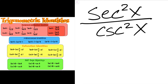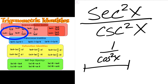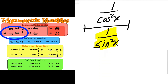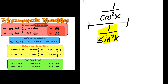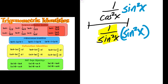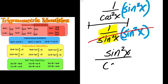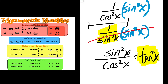So what can I do next? I can simplify both of these: secant squared x simplifies to 1 over cosine squared x, and cosecant squared x simplifies to 1 over sine squared x. I want to get rid of the denominator, so I multiply by its reciprocal, which is sine squared x. That eliminates everything in the denominator, and my numerator becomes sine squared x over cosine squared x, which simplifies to tangent squared x. That is my final solution.